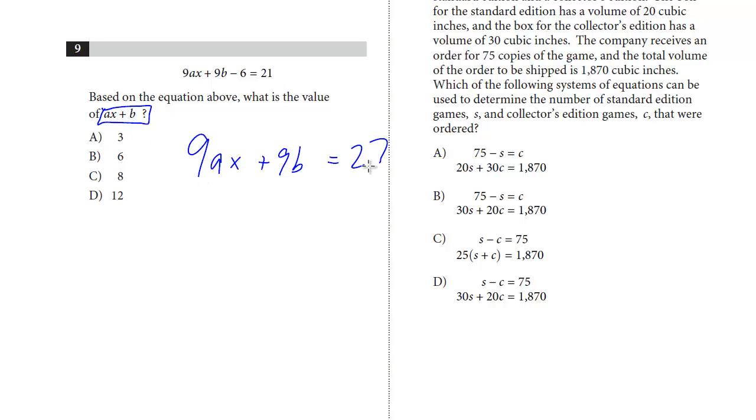How do we reduce this to get ax plus b? Well, we can divide the whole equation by 9. And then we're looking for ax, we get the b. 27 divided by 9 is 3. So it's a pretty straightforward question where you have to manipulate to solve for what the question's asking for.